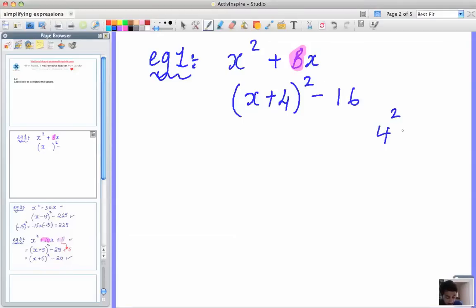4 squared, just in case you don't know, means 4 times 4. And we know 4 times 4 is equal to 16. And there's my answer. Not too difficult. Now, let's take a look at another one very quickly.